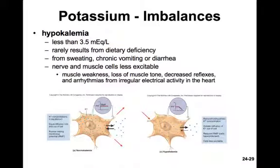Hypokalemia — much less potassium in the blood than necessary — can result from chronic sweating, vomiting, or diarrhea. It rarely results from a dietary deficiency. This makes muscle cells much less excitable, resulting in muscle weakness, loss of muscle tone, decreased reflexes, and arrhythmias from irregular electrical activity in the heart.